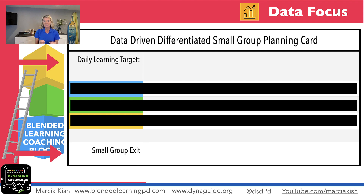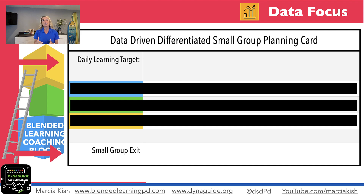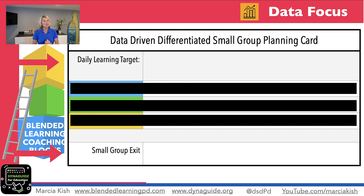Small group exit tickets are a chance for you to see in the moment what those students know. Do they understand that learning target? Can they answer that one question? Also, doing this exit ticket in the small group ensures that it's the students completing that content, not maybe a friend or an AI tool. So we can really use that small group exit ticket to give us true formative data on what the students know.